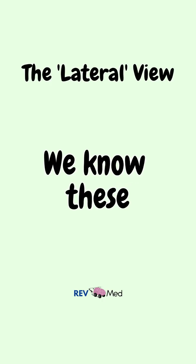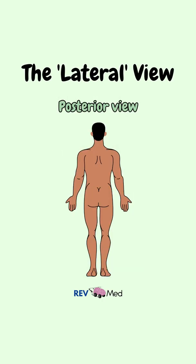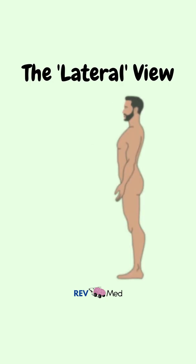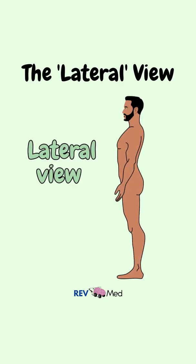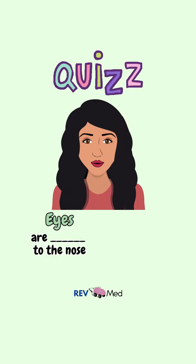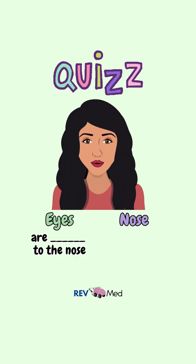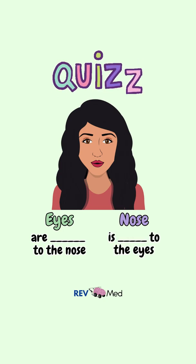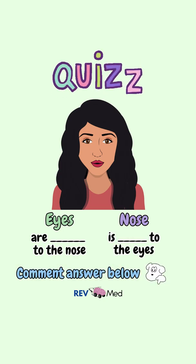The term lateral is also used to describe the view of the body — here the side of the body is in its lateral view. The eyes are blank to the nose, and the nose is blank to the eyes. Comment below what you think.